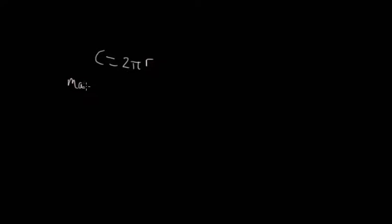Now we want to make the subject r. So first things first, let's just flip it around. So let's have 2 pi r equals C. It means exactly the same. Now, to make this r the subject, we want to basically have r on its own with everything else on the other side.